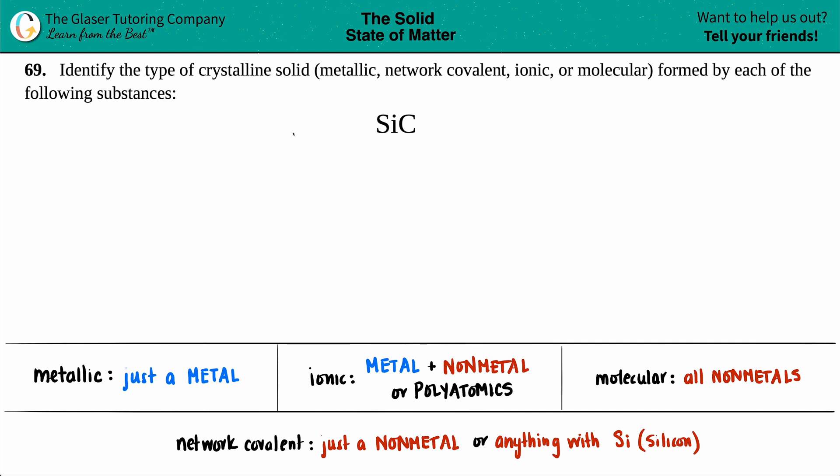Number 69: Identify the type of crystalline solid, whether it's metallic, network covalent, ionic, or molecular, formed by each of the following substances. We have silicon carbide, or SiC. Now, is SiC going to be metallic, network covalent, ionic, or molecular? These are four different types of crystalline solids.